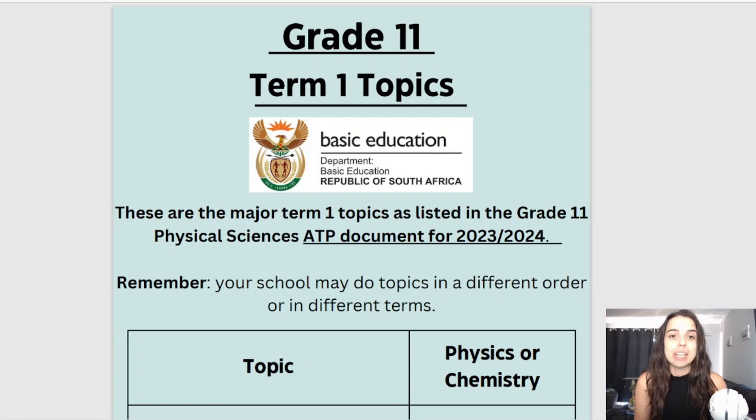First important thing to take note of is the order of the topics that I include in this video and in my free document. That order is determined by the ATPs or the annual teaching plans and these are basically guidelines that are sent from the department to schools. So most schools follow this guideline but your school may not follow this guideline and what that means is that your teacher may teach the topics in a slightly different order. So you're going to have to just double check and confirm the order of topics with your teacher.